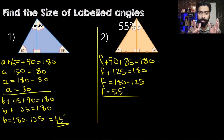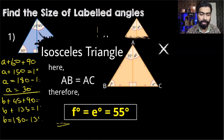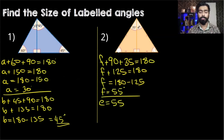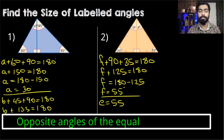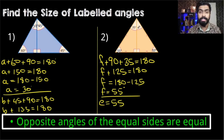Using the understanding of isosceles triangles, we know that angle E will immediately be 55 degrees, because the equal angles in an isosceles triangle will always be opposite to the equal sides.